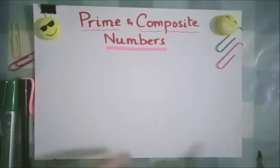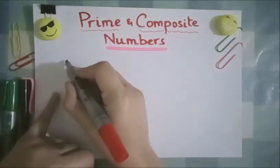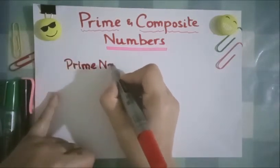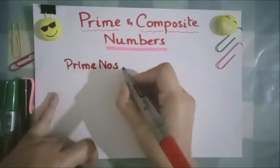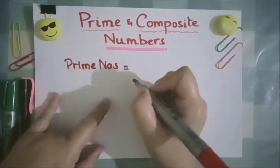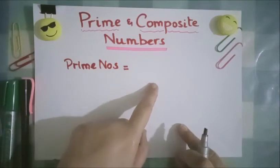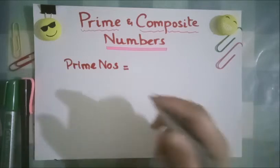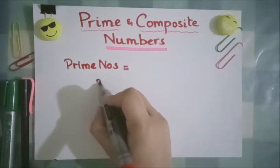So first I am going towards prime numbers. What are prime numbers? Prime numbers are those numbers which have only two factors. Now which numbers have two factors? I am going to write here the number 2 is